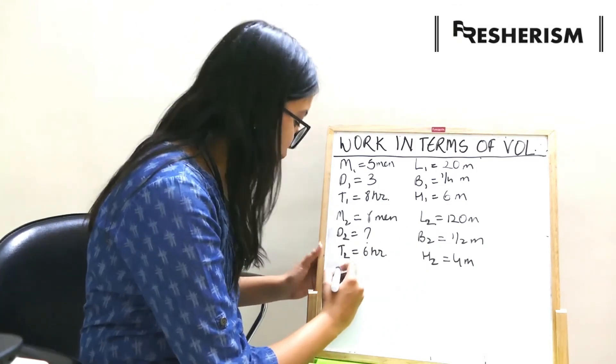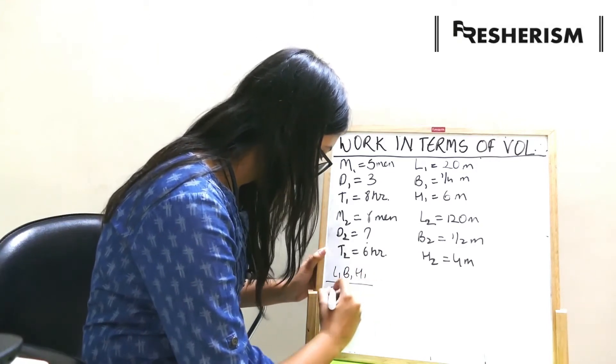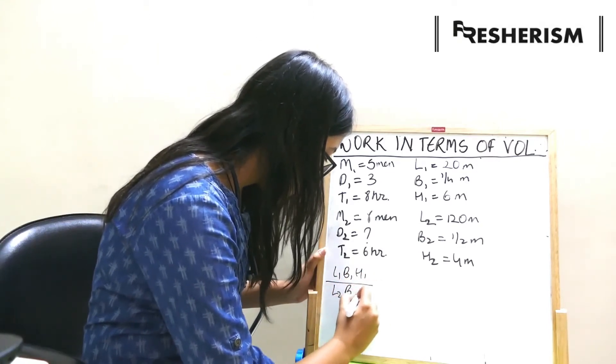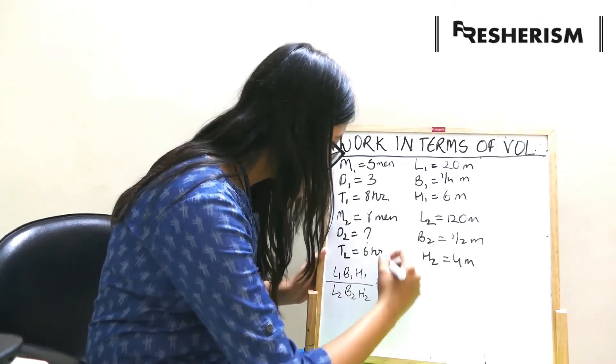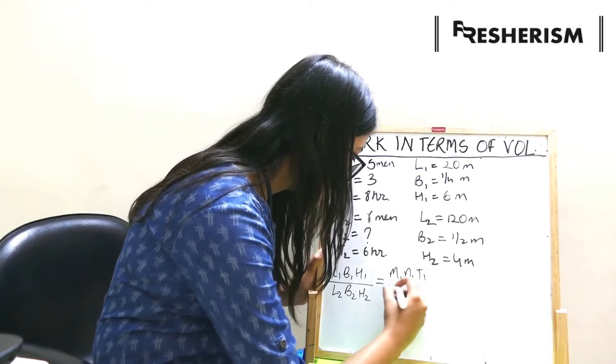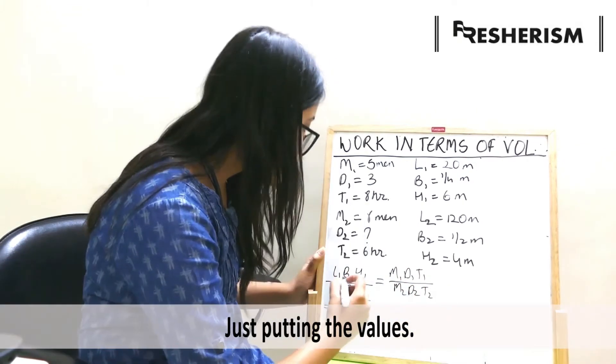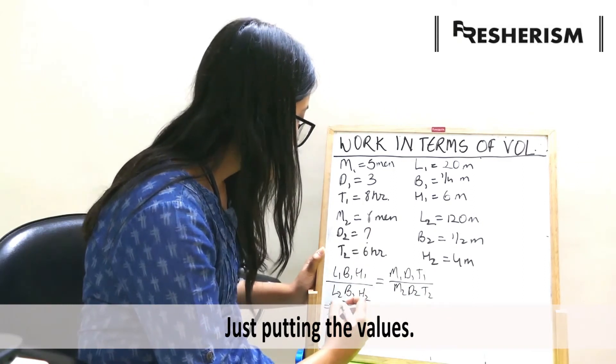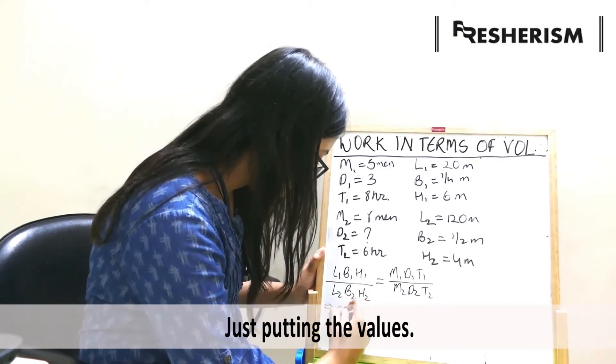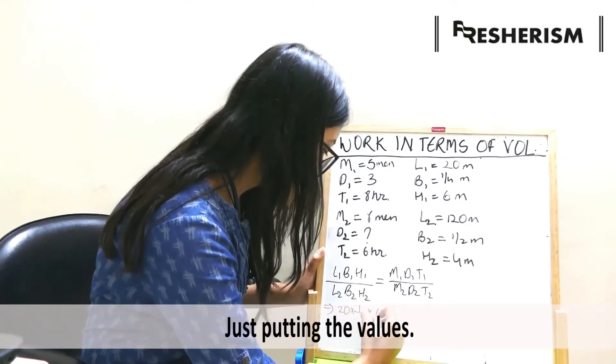To recall, our equation was l1 b1 h1 upon l2 b2 h2, which equals to m1 d1 t1 upon m2 d2 t2. Let us just put all these numericals in the equation that we get 20 into 1 by 4 into 6 upon 120 into 1 by 2 into 4 is equal to 5 into 3 into 8 upon 8 into d2 into 6.